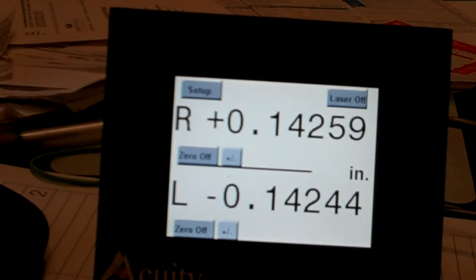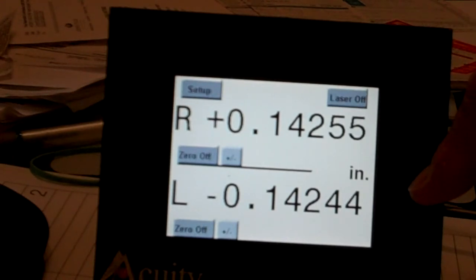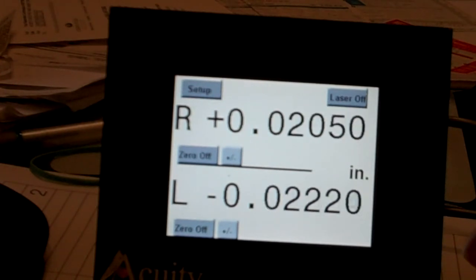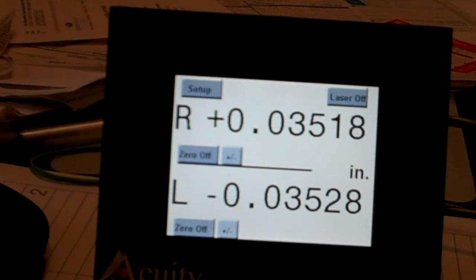And so as you can see as I zeroed it out the right laser is 0.1425 and the other was 0.1424. And the purpose of that is to show you as you move this target within that range you should get the equal and opposite number approximately from the plus to minus. So it's going to equal zero.